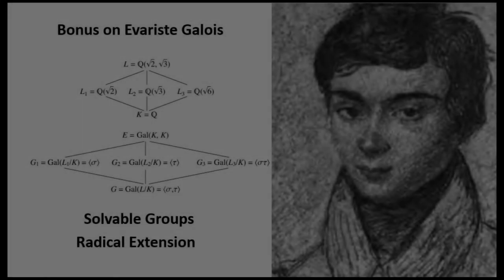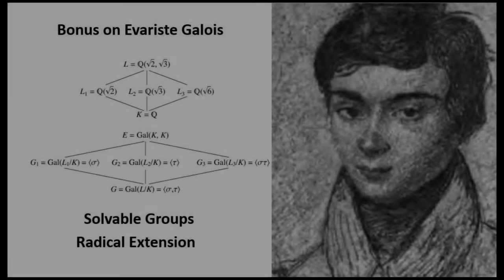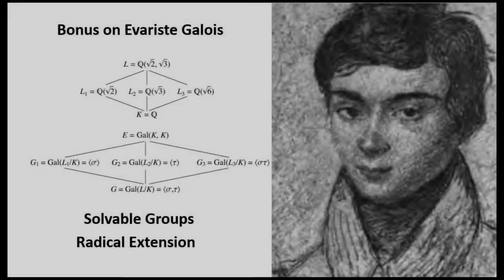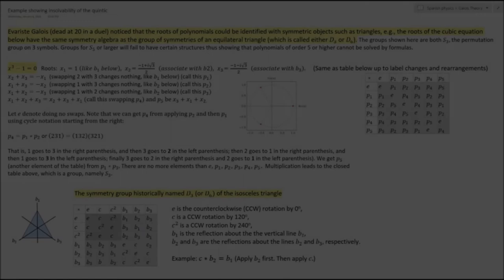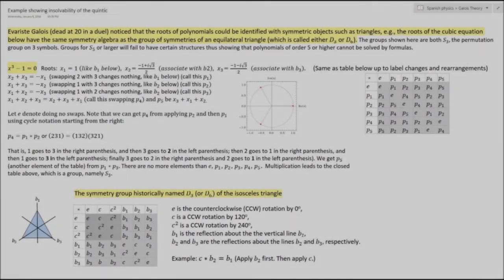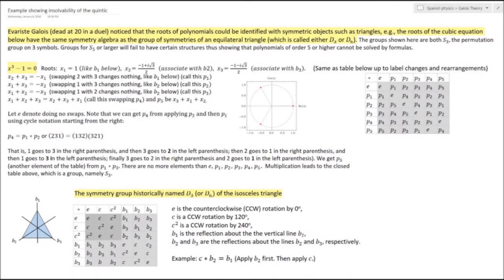A decade before, Niels Henrik Abel, who died at 26, had also discovered much of the methods of abstract algebra and a proof of the unsolvability of the quintic by radical extension. Today, their work is buried in so much mathematical technology and bloatware that you might need a junior, a senior, and quite likely a first-year graduate course dedicated to abstract algebra and Galois theory to dimly understand, at best, what these young gentlemen did about 200 years ago.